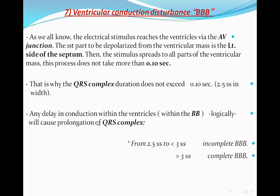Any delay in conduction within the ventricles — within the bundle branches — will logically cause prolongation of the QRS complex. From 2.5 small squares to less than 3 small squares, it will be called incomplete bundle branch block. If it is more than 3 small squares in width, it will be called complete bundle branch block.